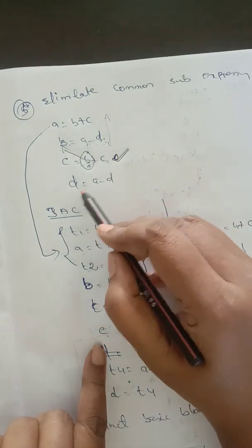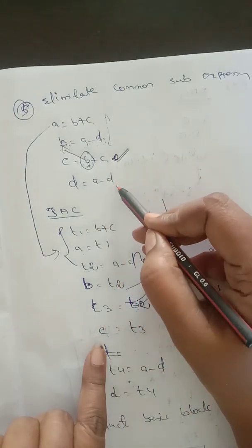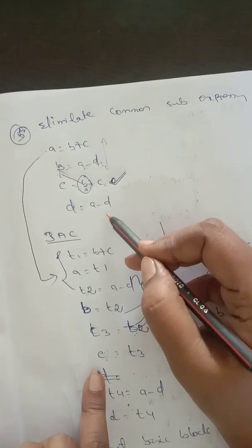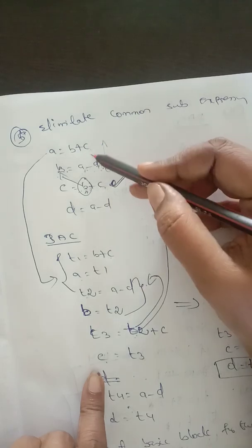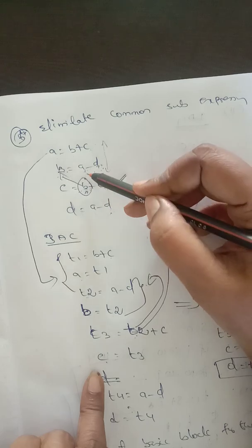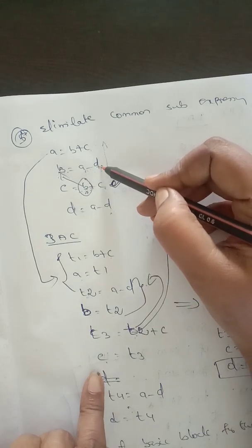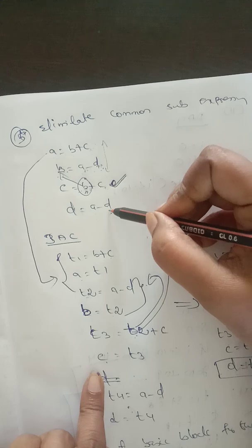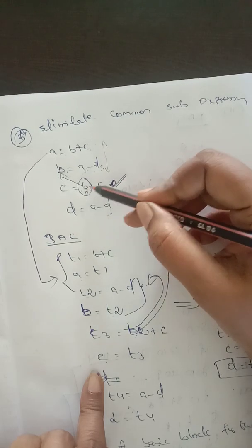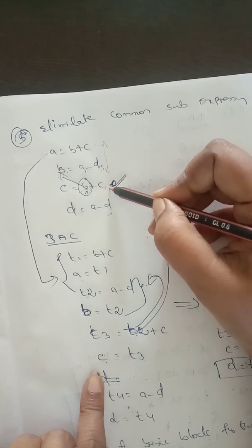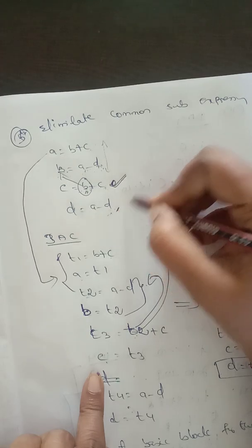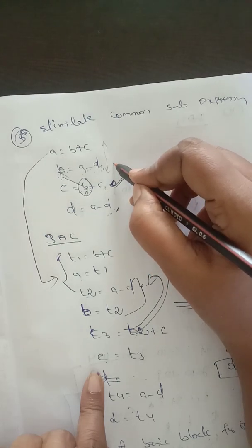Now for the last statement d equal to a minus d, we check whether a minus d is already evaluated. The first line a equal to b plus c is not equivalent. The second line b equal to a minus d — yes, this is the same expression. So the fourth line's expression was already evaluated in the second line.